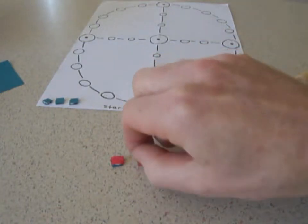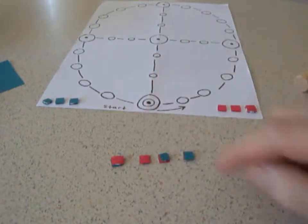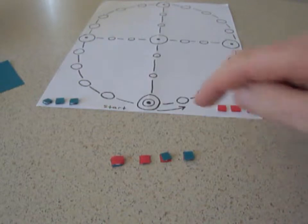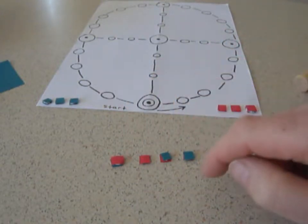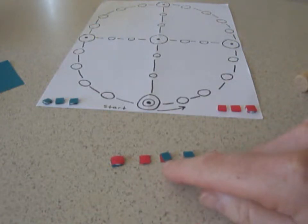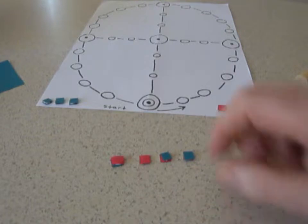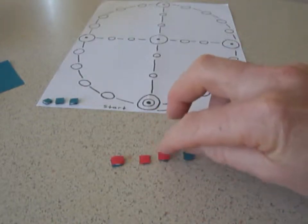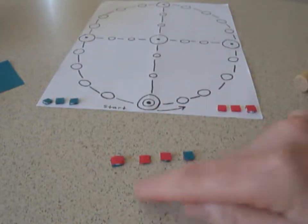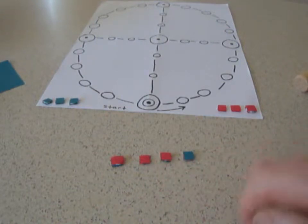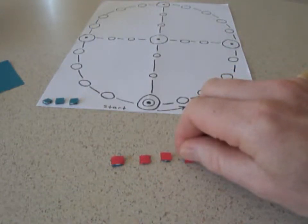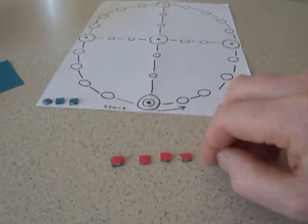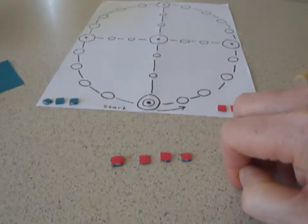Similarly, if it was red's turn and the result was this, two reds, two blues, red would be able to move two spaces. If blue rolled this result, if the result was this, red could move three and blue one. And if red rolled this, they could move four spaces.